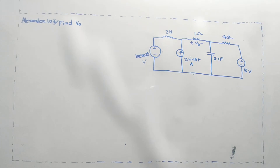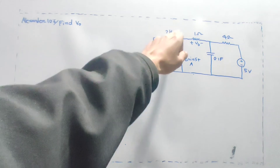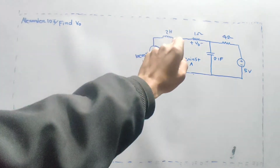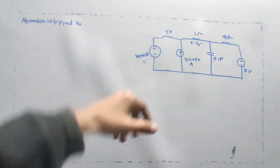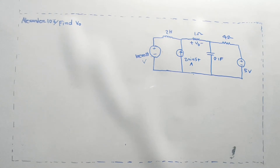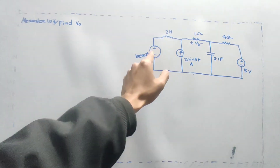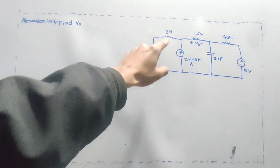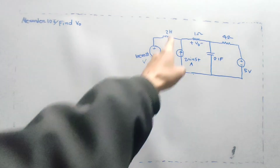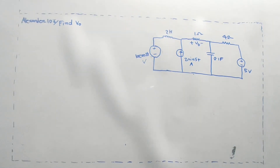Omega is equal to 5, so when we call omega for the voltage source, omega is equal to 2. When omega is equal to 5, and when omega is equal to 2, these are the two impedance cases. We will not be confused about which impedances to use — we will go with omega 2 or omega 5 separately. The impedance is on the right side.